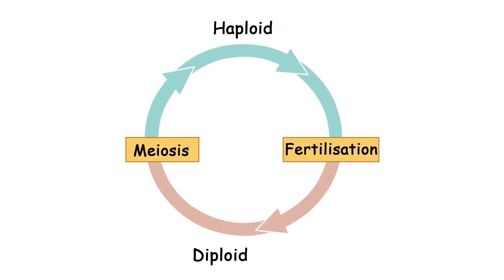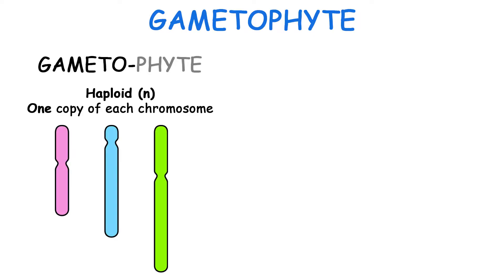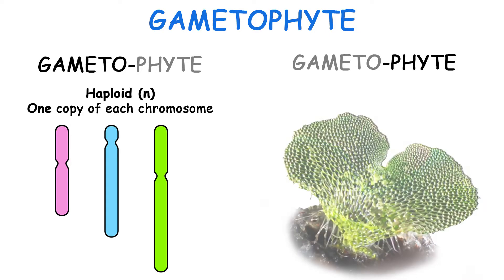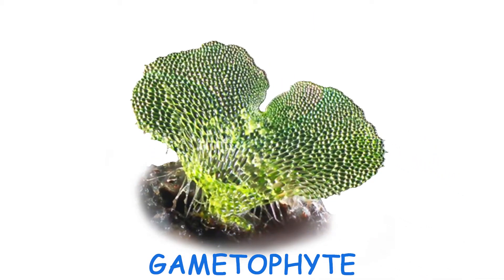Here we see the cycle in full. We'll start at the haploid generation. The haploid generation in plants and algae is the gametophyte — 'gameto' referring to gametes or haploid sex cells, and 'phyte' referring to a plant.